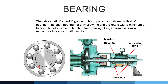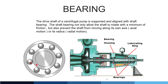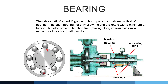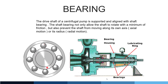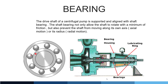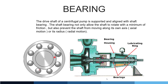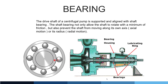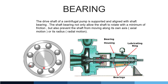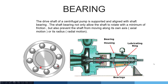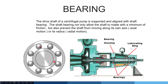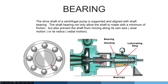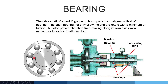Bearing. The drive shaft of the centrifugal pump is supported and aligned by the shaft bearings. The shaft bearings not only allow the shaft to rotate with minimum friction but also prevent the shaft from moving along its own axis or radius — that means axial and radial motions are controlled by the bearings. You can see the bearings in these pictures, including the lubrication ring and bearing housing.